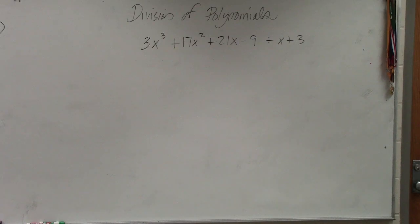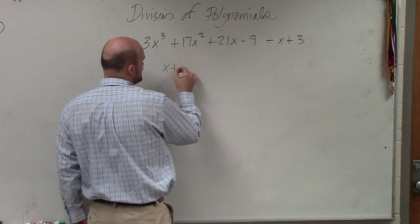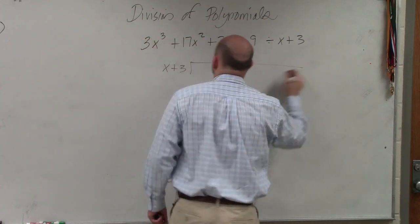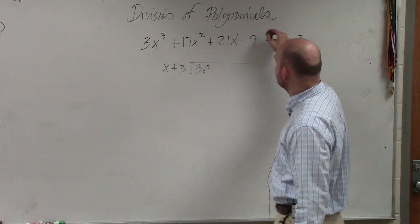So in this example, the main important thing is to write this correctly using long division. So x plus 3 is my divisor. That goes into 3x cubed.